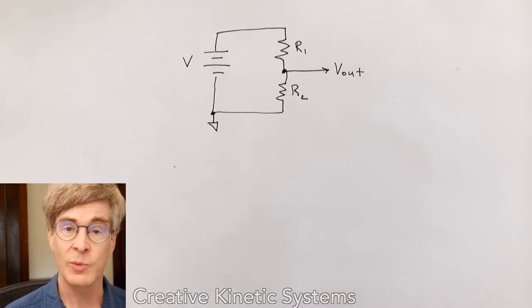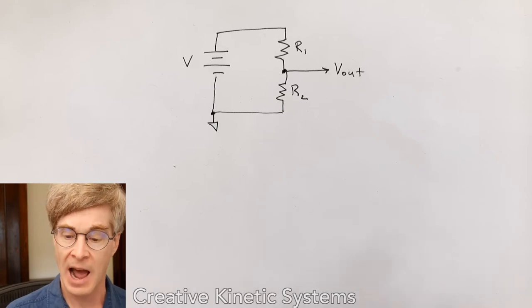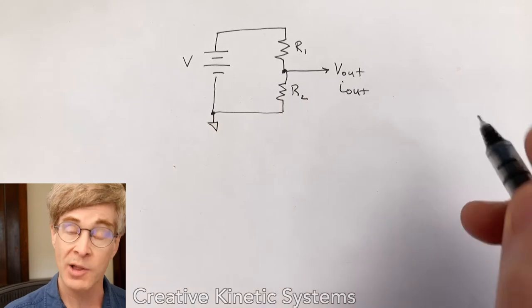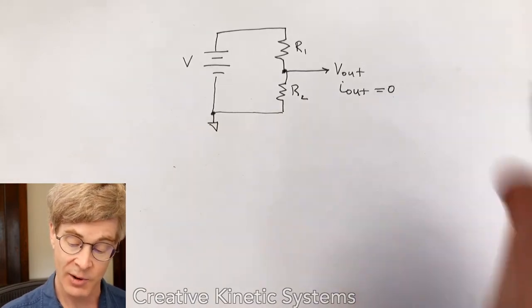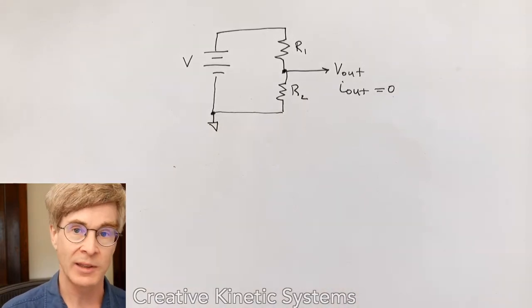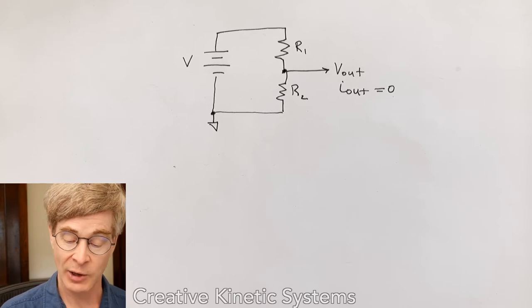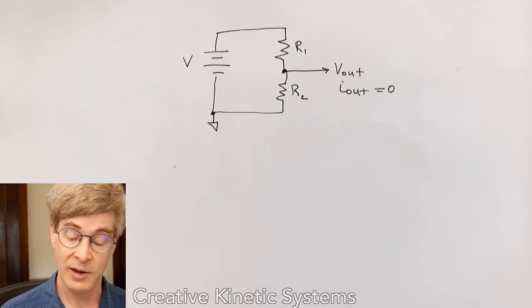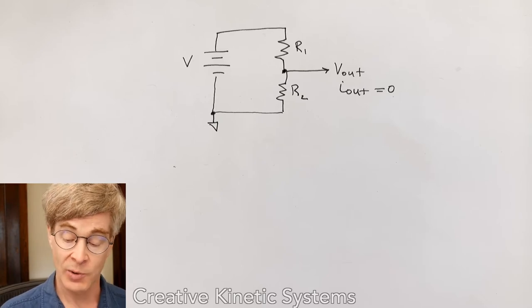As a special case, we're going to assume that we're not drawing any current at that middle node. So that the Iout, the current that might come along that, we're going to say is zero. So we're not connecting anything to it that has any way allowing current to flow.